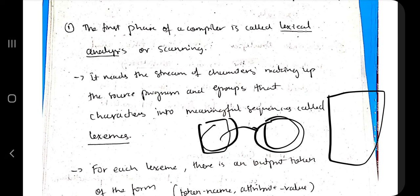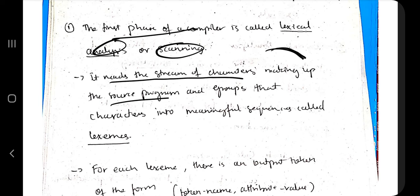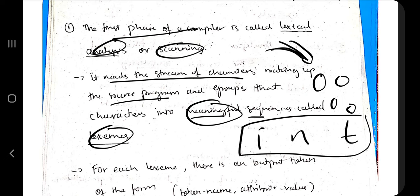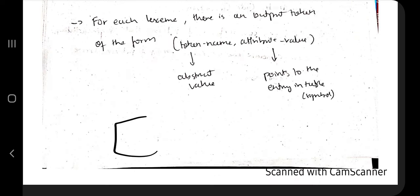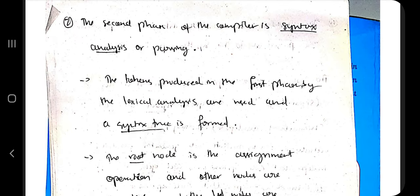The first phase is lexical analysis or scanning. Like a jigsaw puzzle, it reads the stream of characters making up the source program and groups them into meaningful sequences called lexemes — for example, 'i', 'n', 't' are joined to form 'int'. The output is stored as tokens, each consisting of a token name and an attribute value.